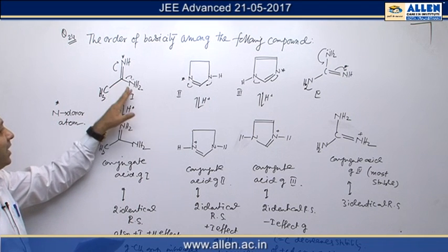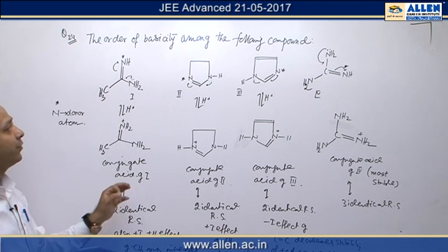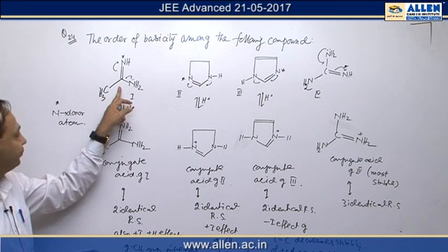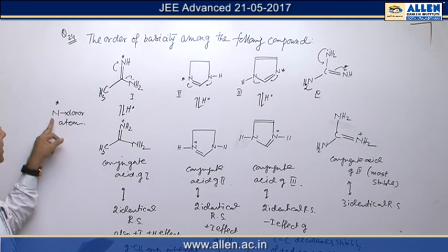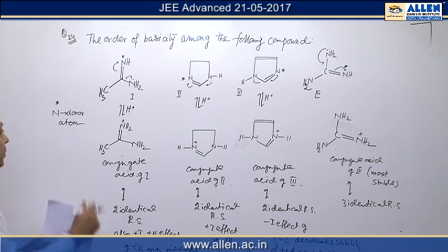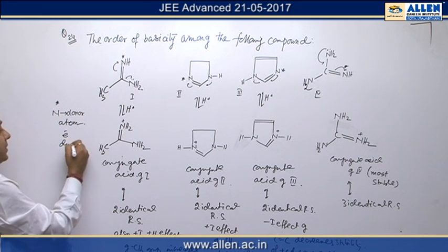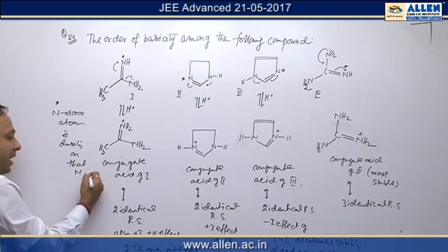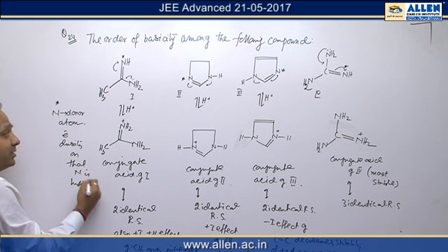First of all that nitrogen will be most basic which having negative charge on which electron density is highest. So in multi-center system, first of all we have to understand what is the donor site and in all the compounds star nitrogen is the donor atom because electron density on that nitrogen is highest. This is the first point.